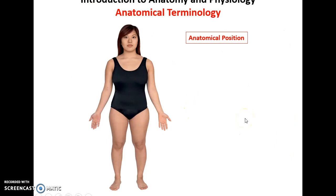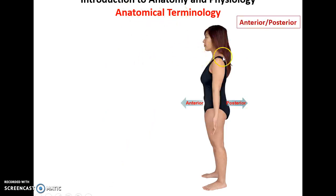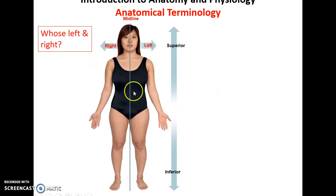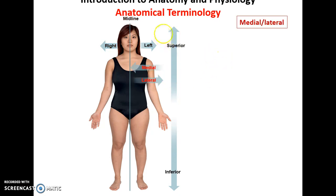Anatomical position is the standard reference: the person is facing forward with palms facing anteriorly. Directional terms are used to compare two structures. Anterior means toward the front of the body; posterior means toward the back — the belly button is anterior to the small of the back. Superior and inferior mean toward the head versus toward the feet — the belly button is inferior to the sternum. Right and left refer to the patient's right and left, as we are bilateral with a midline dividing us into two equivalent sides. Lateral means away from the midline; medial means toward it — the nose is medial to the ear.